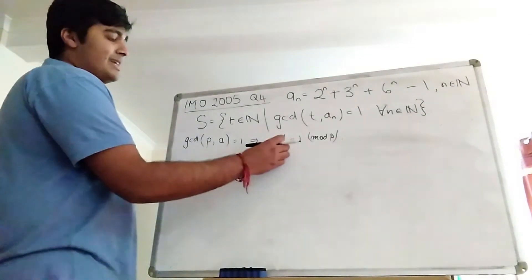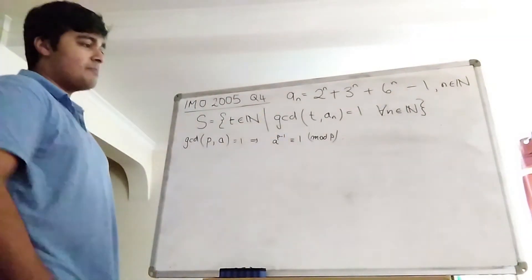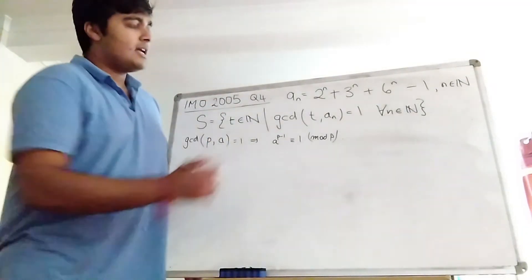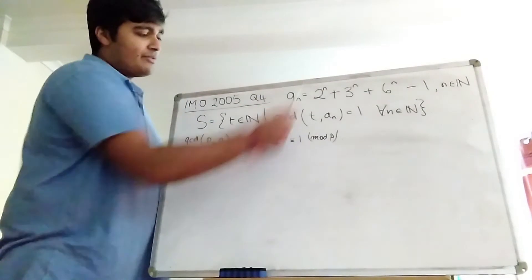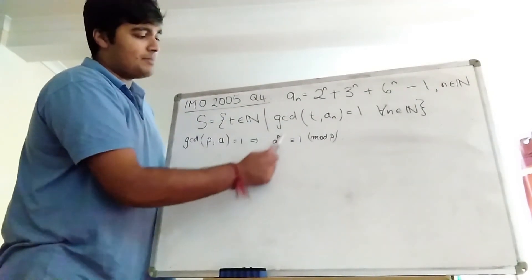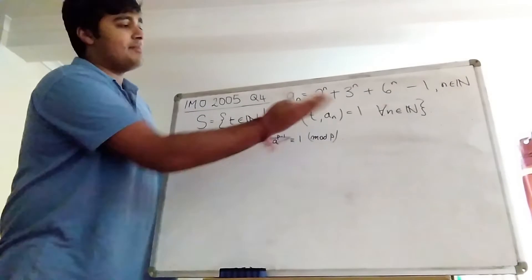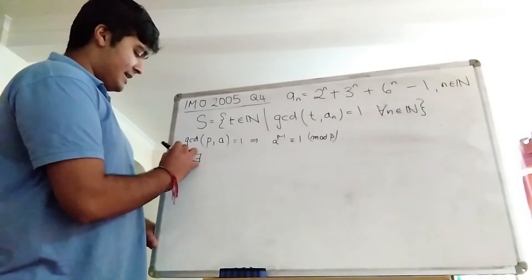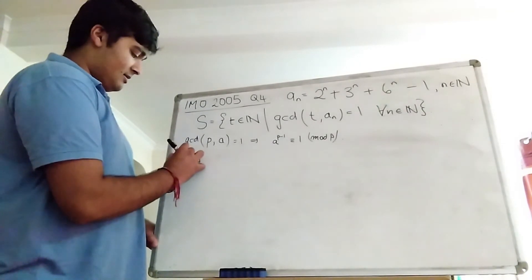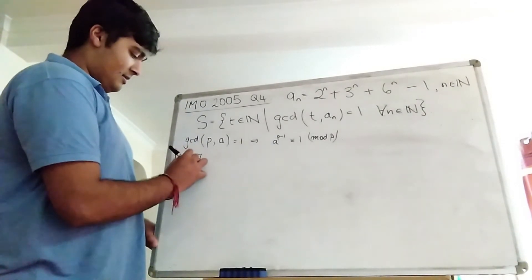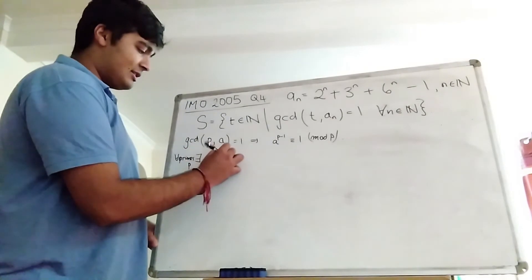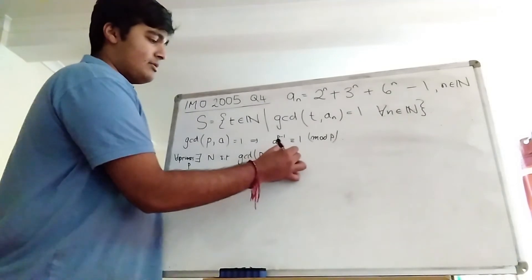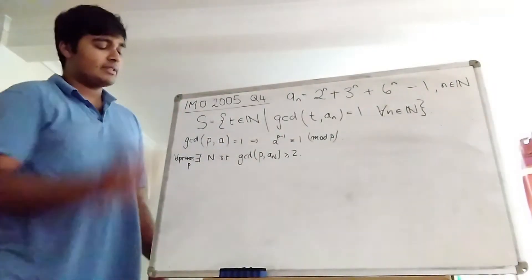In other words, the remainder when you divide a to the p minus one by p is one. How is this going to help us? Well, if we look at this expression, we've got things raised to a power of p minus one, and I want to show that there are no prime numbers in S. In other words, for each prime number p, there exists some n such that the GCD of p and aₙ is greater than or equal to two, and that will show that p is not in S.